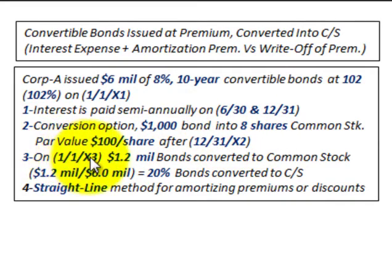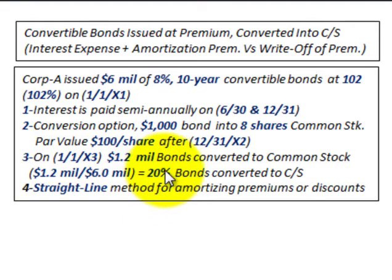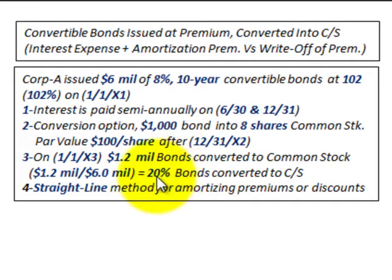The bonds can be converted after 12/31/X2. On 11X3, $1.2 million of these bonds were converted into common stock — so 20% of the bonds were converted. That's the $1.2 million converted divided by the total of $6 million outstanding, which equals 20%.